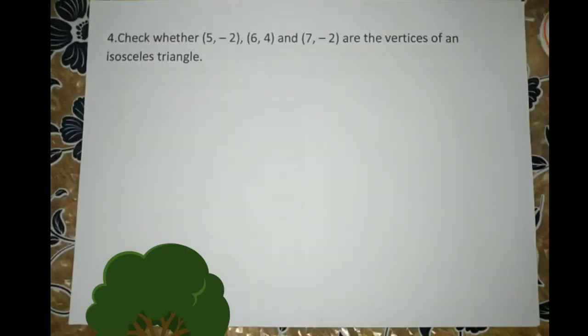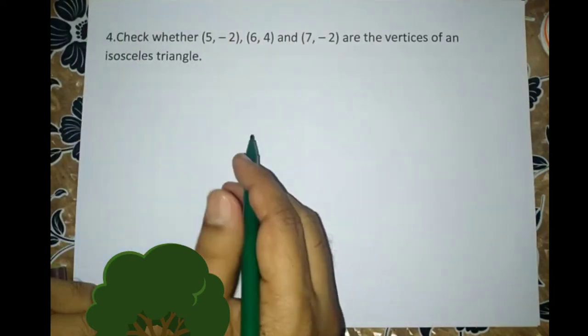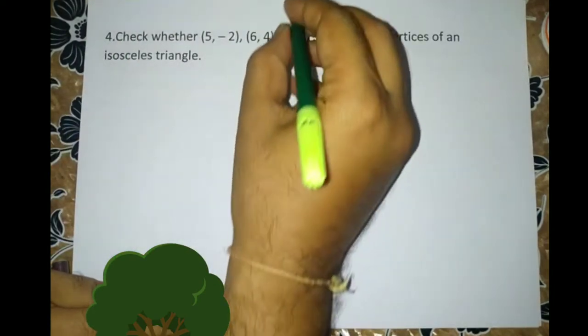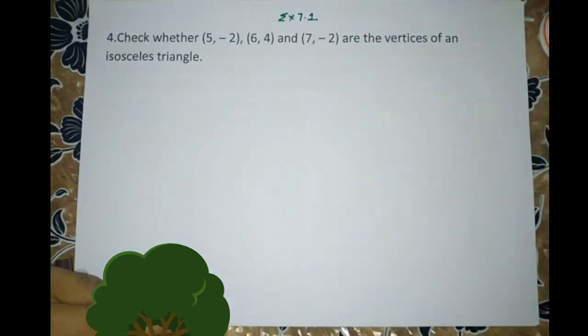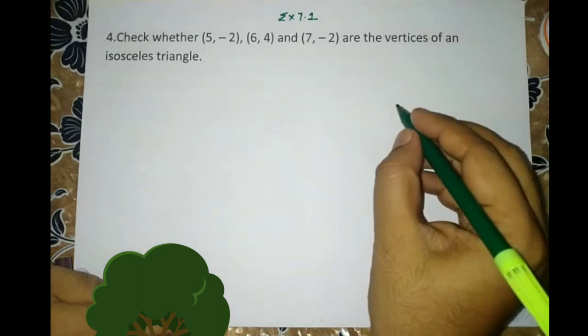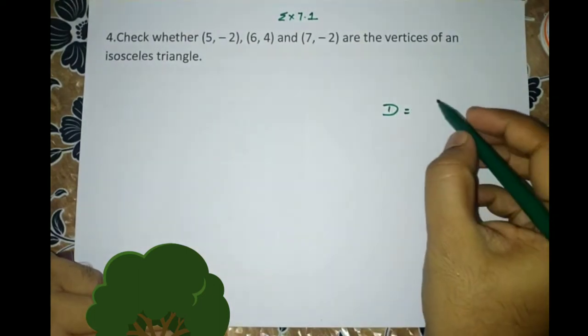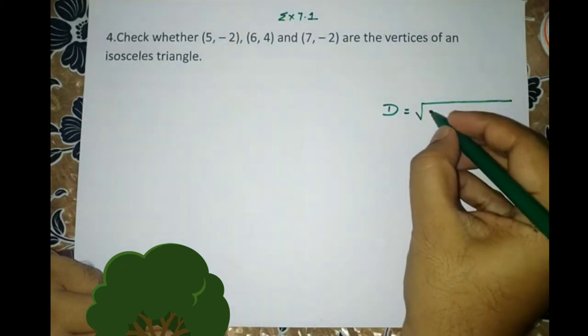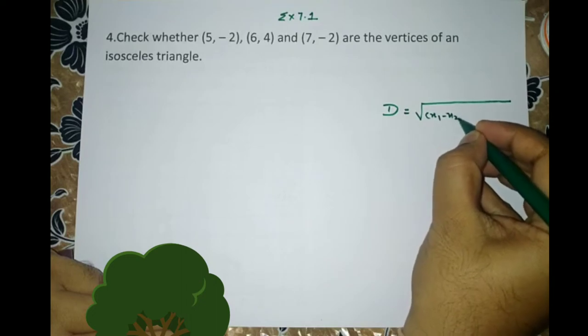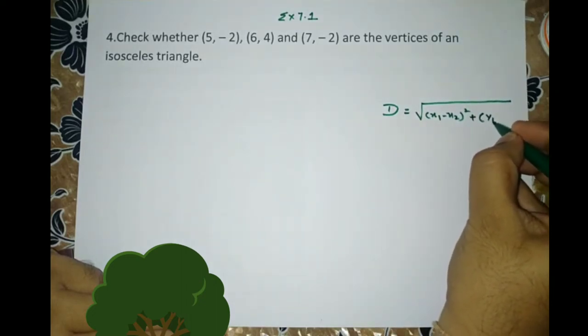Children, question number 4 is you have to check whether these three points are the vertices of an isosceles triangle or not. This is from exercise 7.1. Let us write down the distance formula. We know that it is the square root of sum of differences of the abscissa square and ordinate square.